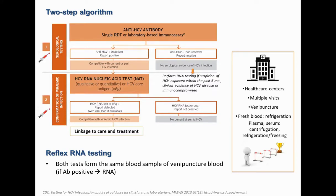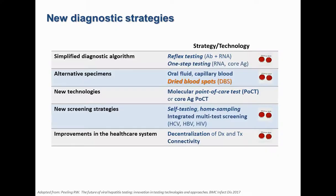This causes losses to follow-up in the two-step algorithm. This may be simplified by performing both tests from the same venipuncture blood sample. Still, hepatitis C diagnosis requires multiple visits to healthcare centers, the use of venipuncture, and fresh blood requires certain conditions for storage and shipment to the laboratory, including cold chain.